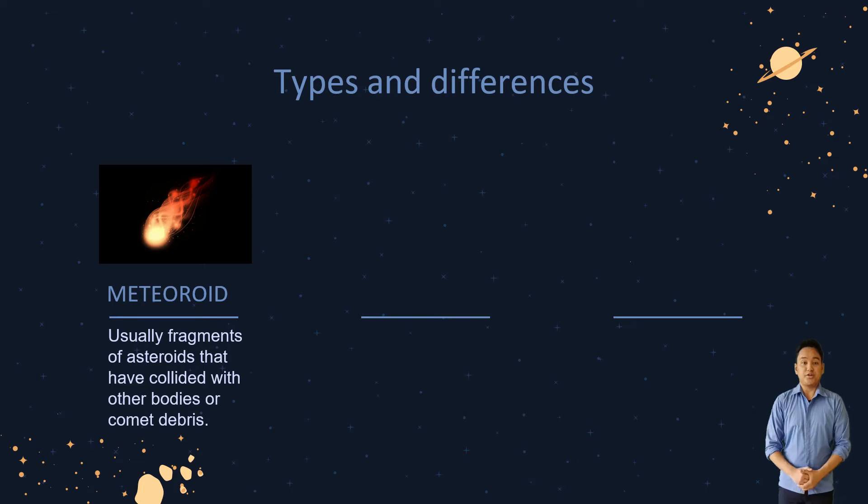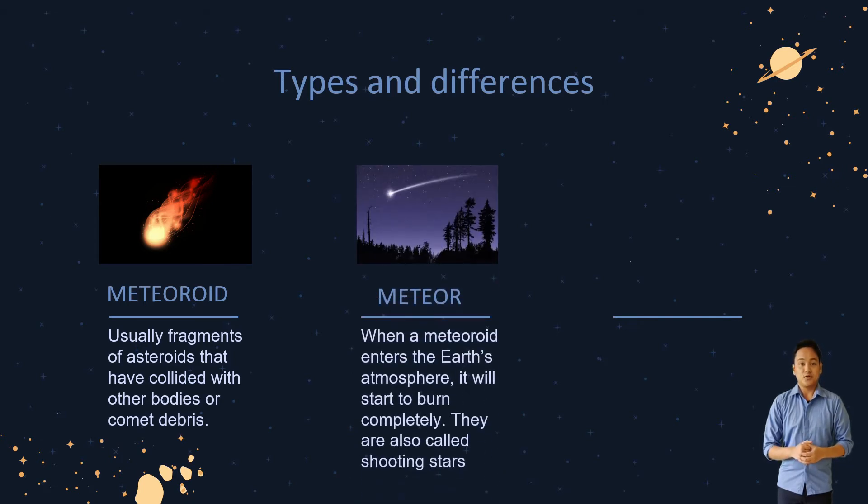When a meteoroid enters the Earth's atmosphere, it will start to burn completely. The reason why it burns is because of the air resistance of the Earth's atmosphere. As it burns, it leaves a trail of light. This is called a meteor, or as we commonly call them, shooting stars.